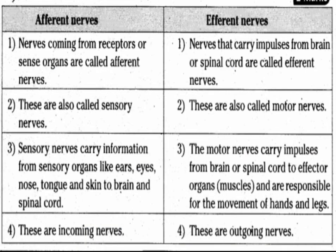Now we discuss the types of neurons. Afferent neurons — basically called sensory neurons — carry signals from the peripheral nervous system to the central nervous system. These incoming neurons bring information from sensory organs like eyes, ears, nose, tongue, blood vessels, and muscles to the brain or spinal cord.